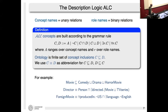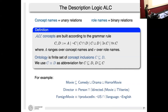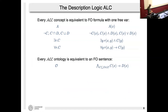A short example from the movie domain in ALC: every movie is a comedy, drama, or horror movie; a director is defined as a person who has directed a movie or TV series; and a foreign movie is defined as something produced only in non-US countries that has at least one non-English language — this is actually the official Academy definition. Concepts on both left and right can be compound or atomic.